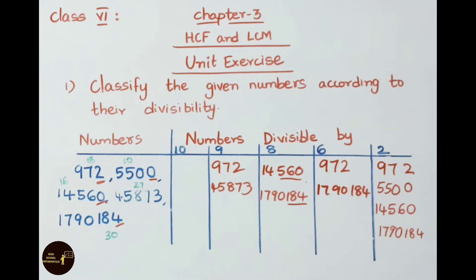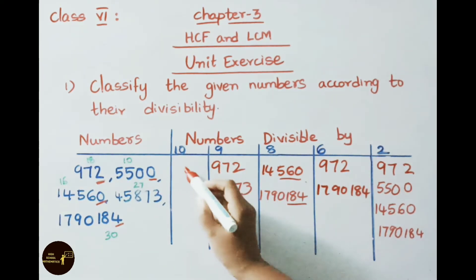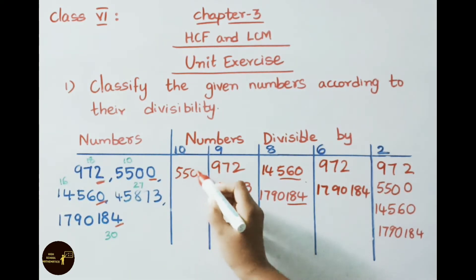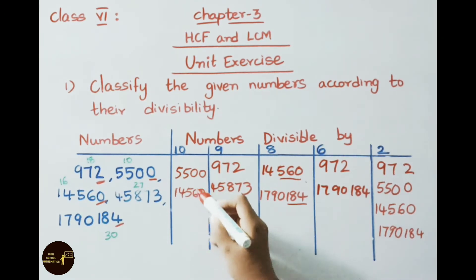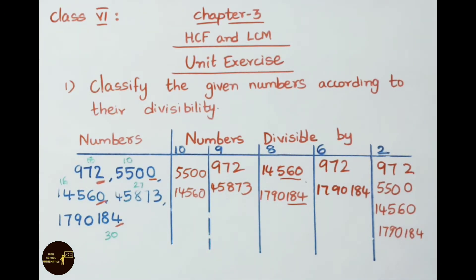Next, divisibility by 10: the unit's place must have 0. Therefore 5500 and 14560 are divisible by 10. Now let us see the second sum.